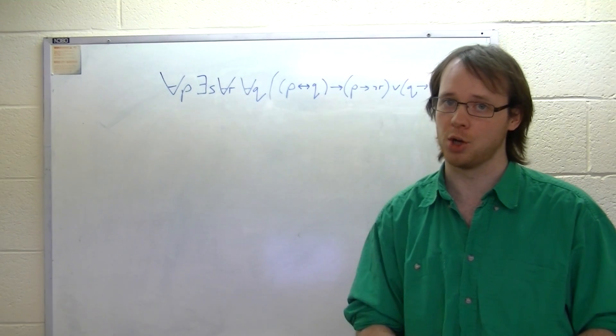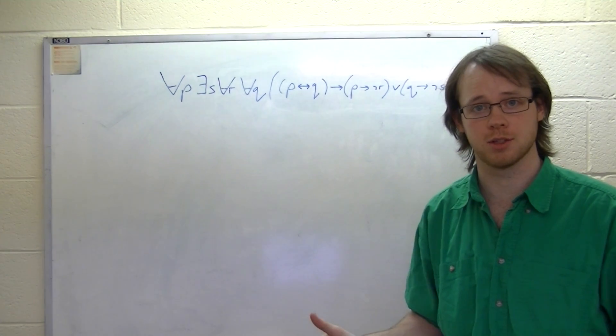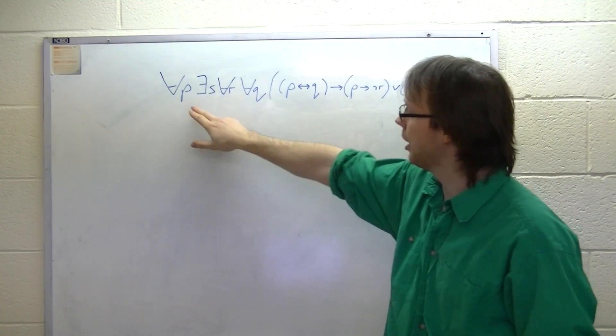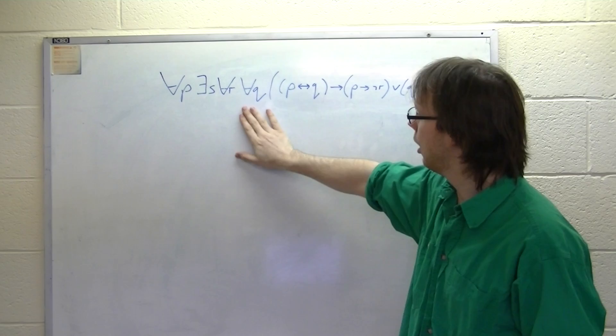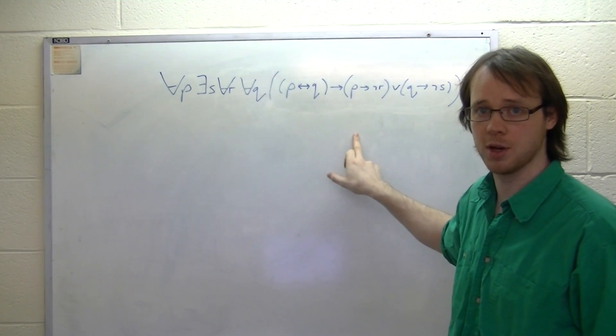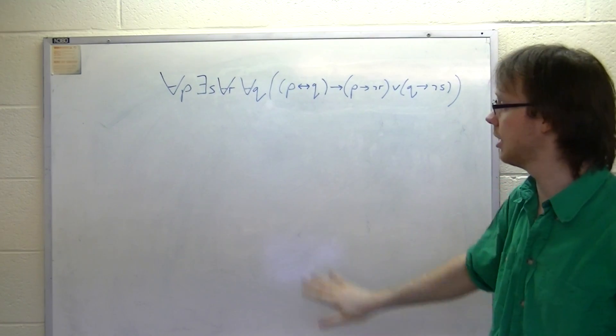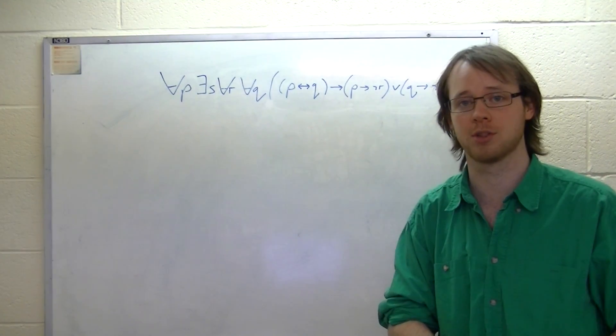So the first thing to note is that this QBF is closed, which means that there are no decisions to be made. P, S, R, and Q are all going to be changed, their values are going to be changed by evaluating the quantifiers as we go down, which means that this closed QBF is either true or false. We don't know which yet.